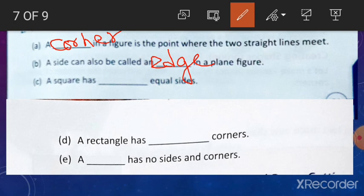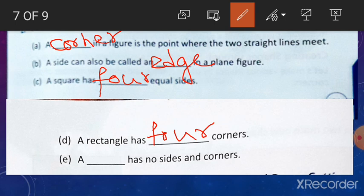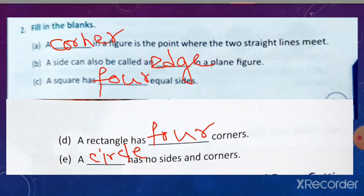A square has four equal sides — so write here four. A rectangle has four corners. A blank has no sides and corners — a circle has no sides and corners. Children, complete these pages. Thank you.